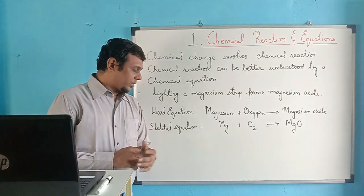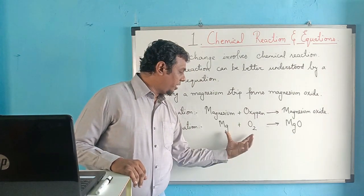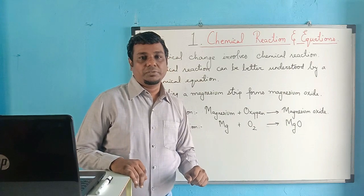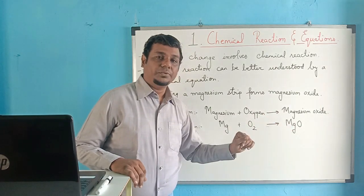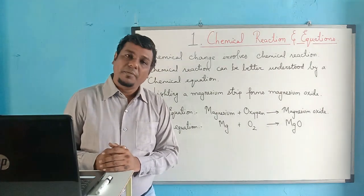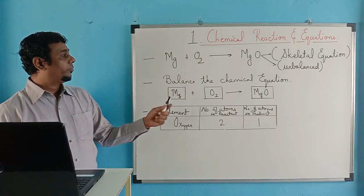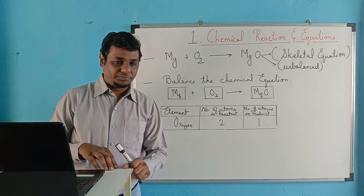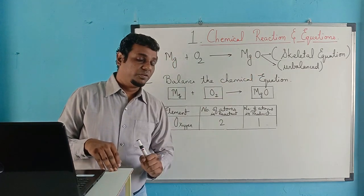Why do we call it a skeletal equation? Because according to the law of conservation of mass, in the reactant there are two atoms of oxygen, but in the product there is only one atom of oxygen. From reactant to product, the balance is not maintained. Two oxygen becomes one oxygen, which violates the law of conservation of mass. That is why this is called a skeletal equation — also called an unbalanced equation, because it is not balanced on both sides.